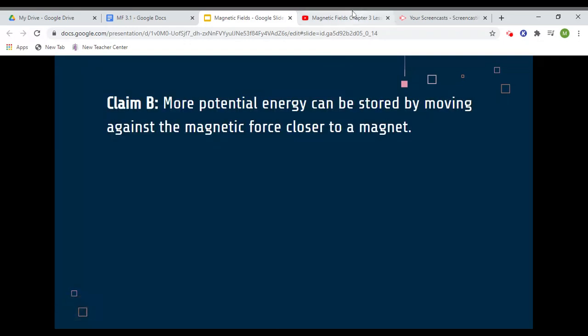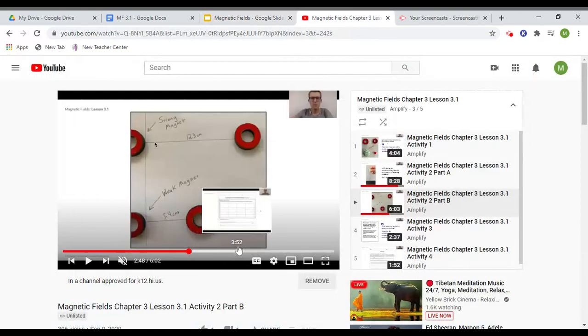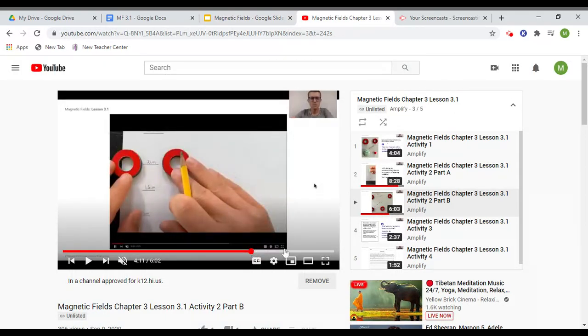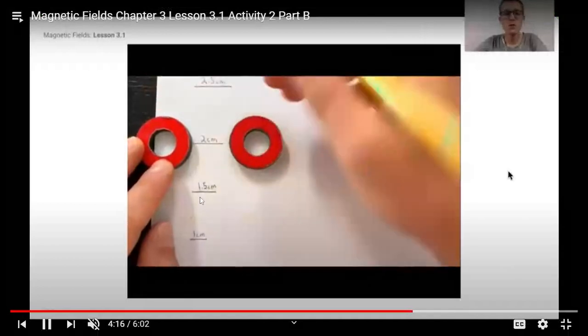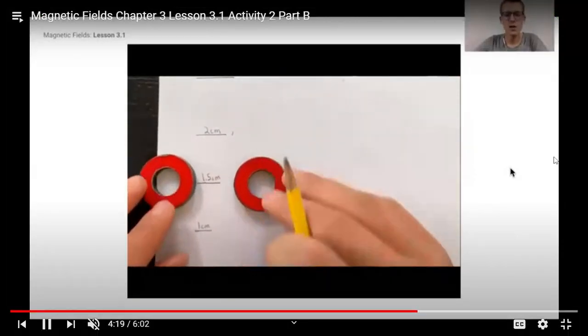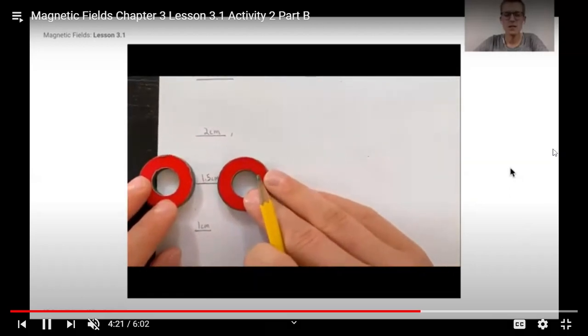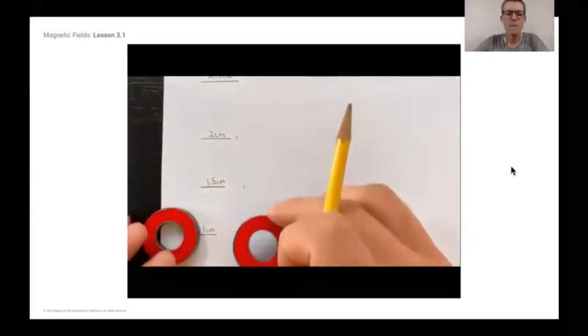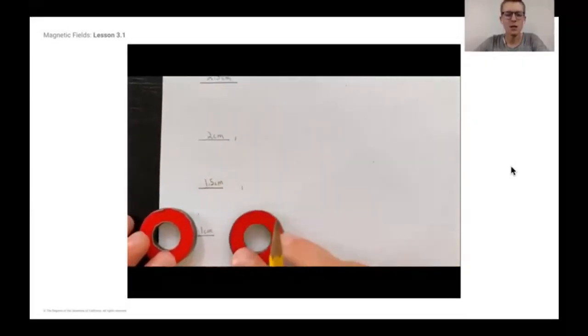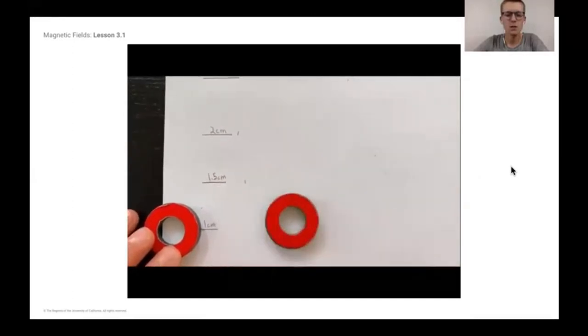And we'll move along to Claim B. More potential energy can be stored by moving against the magnetic force closer to a magnet. We're going to watch that video now. We have different lengths of how far apart our magnets are. Again, try to keep in mind what's being kept the same and what is changing for each test.